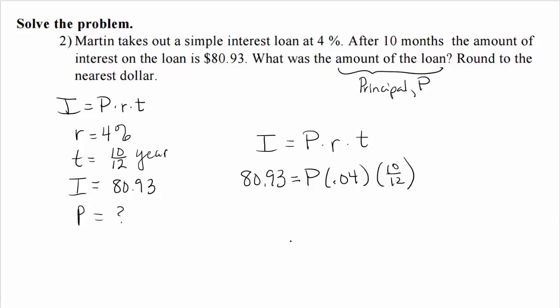To solve for P, notice that P is being multiplied by 0.04 and 10/12. We'll reverse this by dividing both sides by both factors. This gives us P = 80.93 ÷ (0.04 × 10/12).